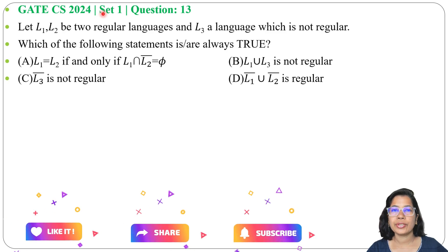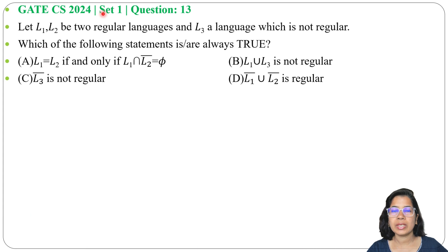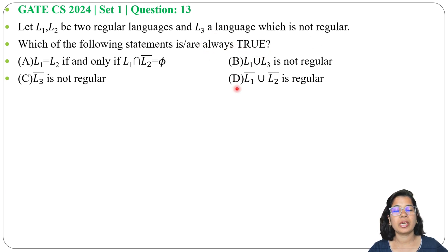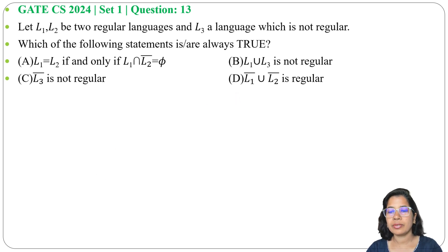Let's solve a previous question on regular languages. This question was asked in GATE CS 2024 Set 1, Question number 13. Let L1 and L2 be two regular languages, and L3 a language which is not regular. Which of the following statements are always true? Four options are given — let's check them one by one.